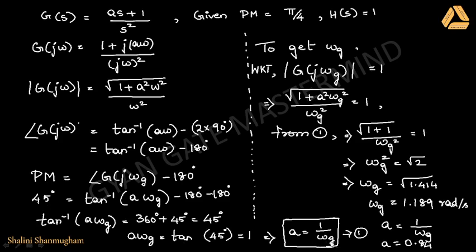We have to find the gain crossover frequency. We know that the magnitude of the open loop transfer function at the gain crossover frequency equals 1. By substituting the magnitude and equating to 1, you get the gain crossover frequency, from which you can find the value of a, which is 0.84.